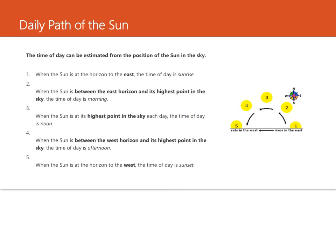Let's look more at this daily path of the Sun. The Sun follows an east-to-west path every day. Your directions are north, east, south, and west. It rises in the east; at noon it's about here; and it'll set or go down in the west. So the Sun rises in the east and sets in the west. This motion is due really to the Earth rotating on its axis once every day.